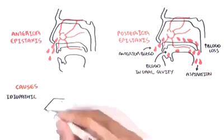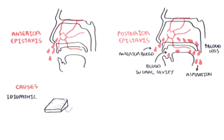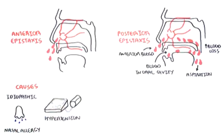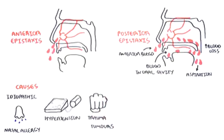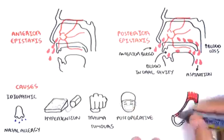The causes of epistaxis include idiopathic, just out of the blue, hypertension, having a nasal allergy which causes irritation and subsequent bleeding. It can also occur following trauma like a punch in the nose, tumors around the area, post-surgery, and having coagulopathies or vascular problems.